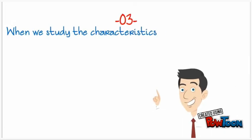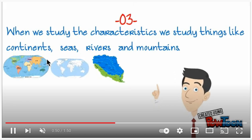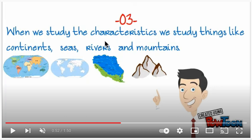When we study the characteristics, we study things like continents, seas, rivers, and mountains. These are the characteristics that make up our earth. What are some of the continents we see on this map? We're looking at a globe — what are some of the seas, the oceans, the rivers within different countries and continents, and mountains as well? All of this pertains to landforms.